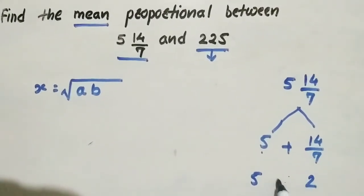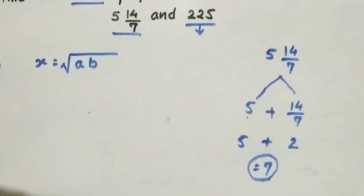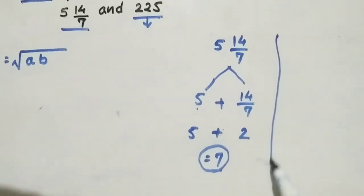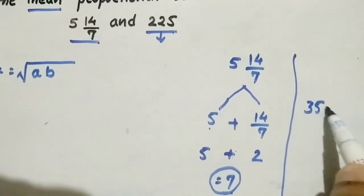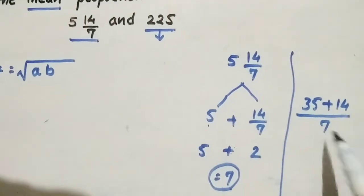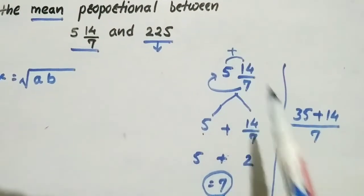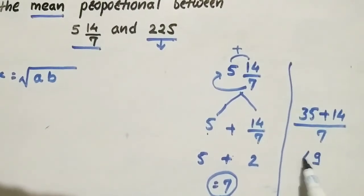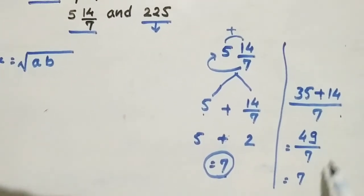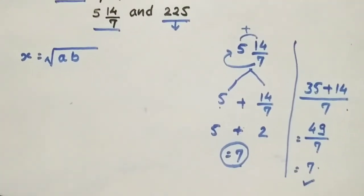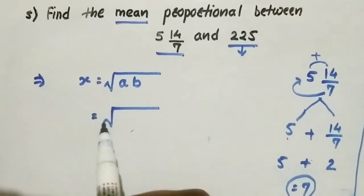So 5 and 14/7: five sevens are 35, plus 14, gives 49 divided by 7. So the value is 49/7 which equals 7. The second value is 225. So x equals square root of 7 times 225. The square root of 225 is 15, and square root of 7 stays, giving 15 times square root of 7 as the answer.